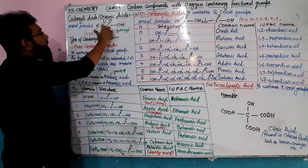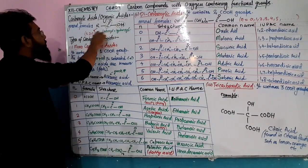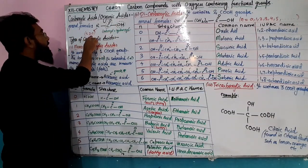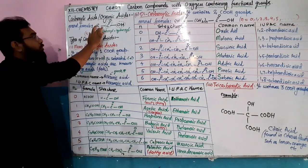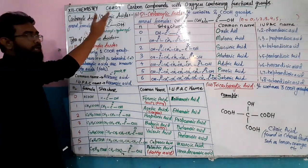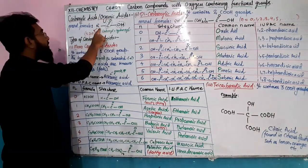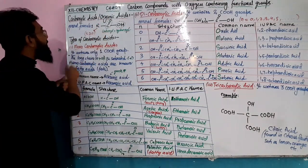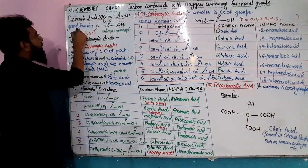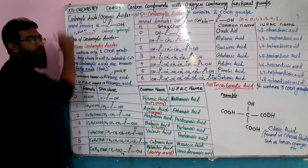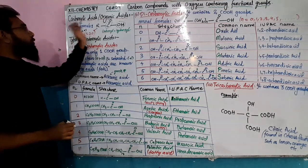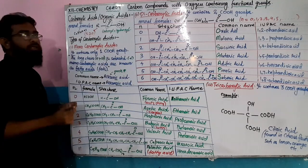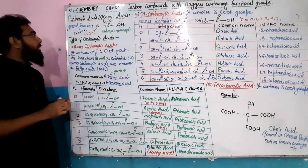In the general formula R-COOH, the value of n is greater than or equal to 0, meaning n can be 0 or any positive value. R can be represented as CnH2n+1. So when n equals 0, R is just H, and as n increases we get longer carbon chains.